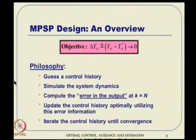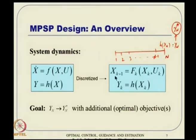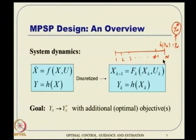The philosophy is: we start with some sort of a guess control history and an initial condition, propagate the system dynamics, and ultimately arrive at some y_n value. Obviously that is not close to y_n*, because the control applied is a guess history. So there is an error, and the objective is to adjust the guess control history values so that, after the update, the trajectory leads to an x_n for which y_n is closer to y_n*.